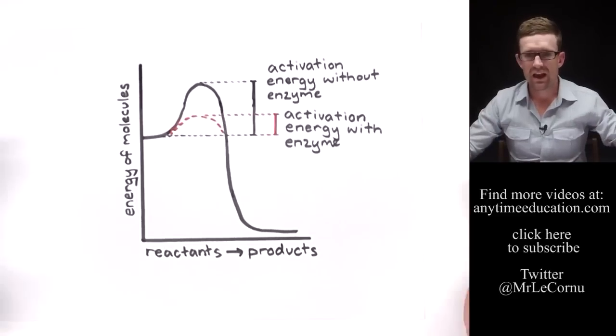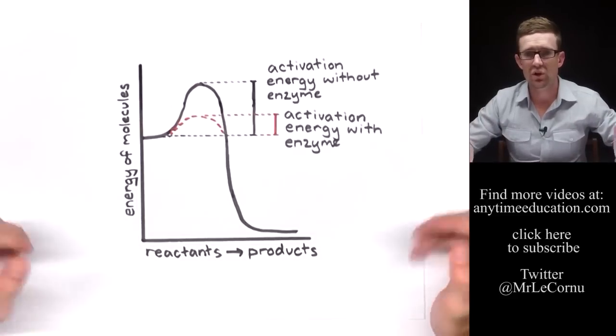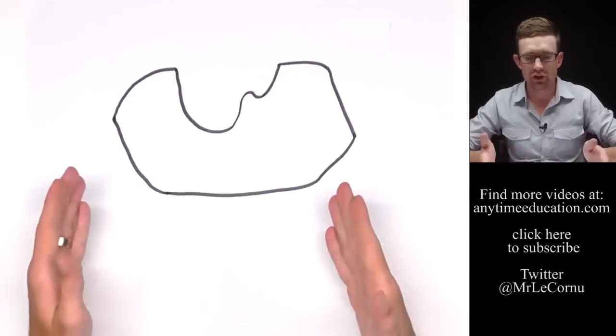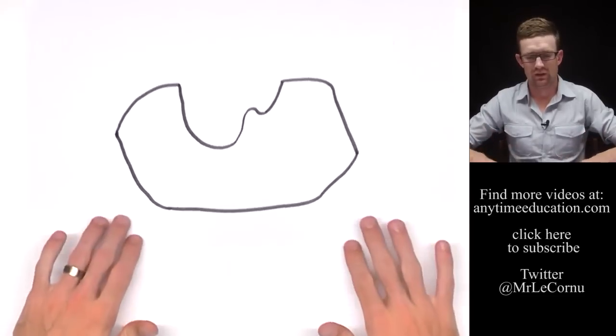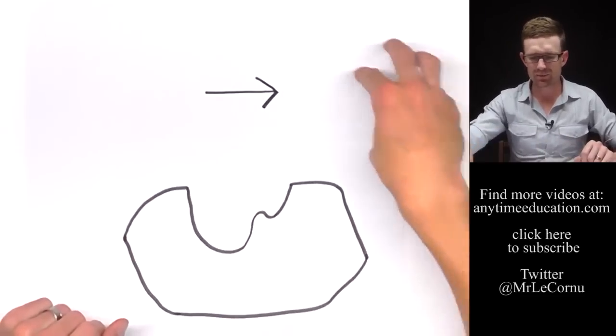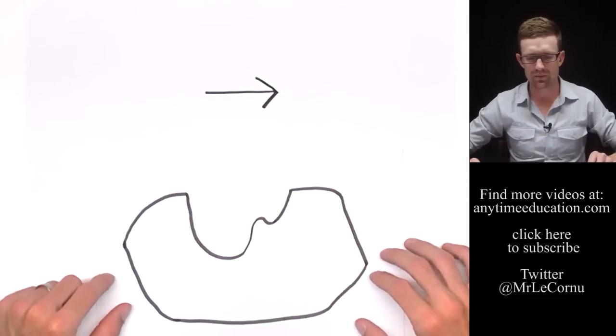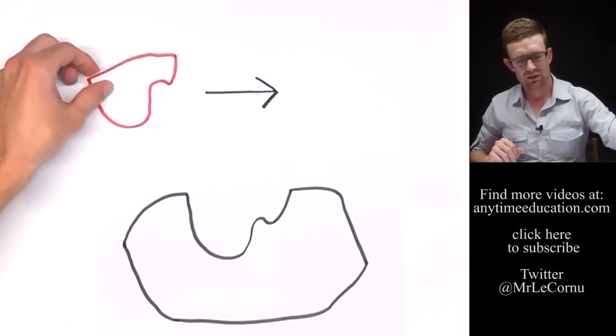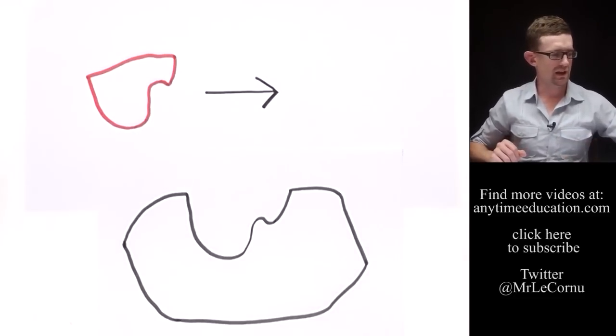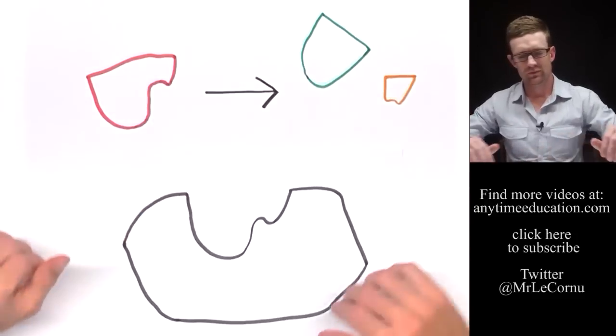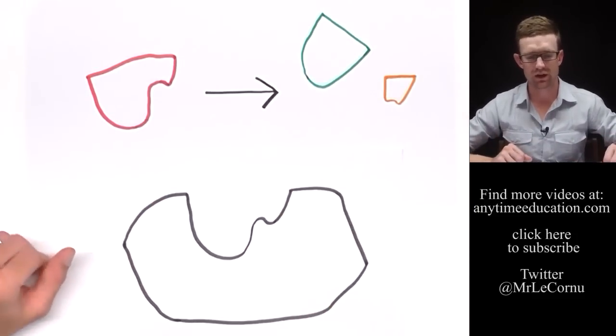But the next question is how does an enzyme lower the amount of activation energy required? So here we have an enzyme. This enzyme has an active site and some sort of reaction is going to be catalyzed by this particular enzyme. This may be the substrate and these may be the products if we're talking about a breakdown reaction.